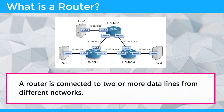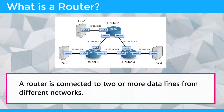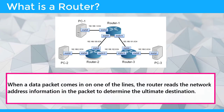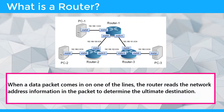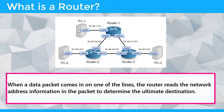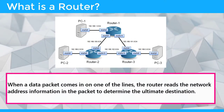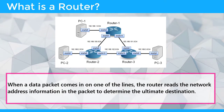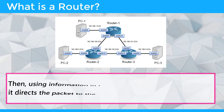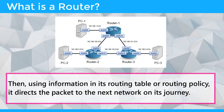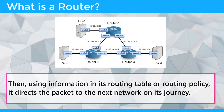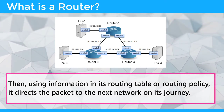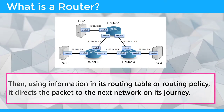A router is connected to two or more data lines from different networks. When a data packet comes in on one of the lines, the router reads the network address information in the packet to determine the ultimate destination. Then, using information in its routing table or routing policy, it directs the packet to the next network on its journey.